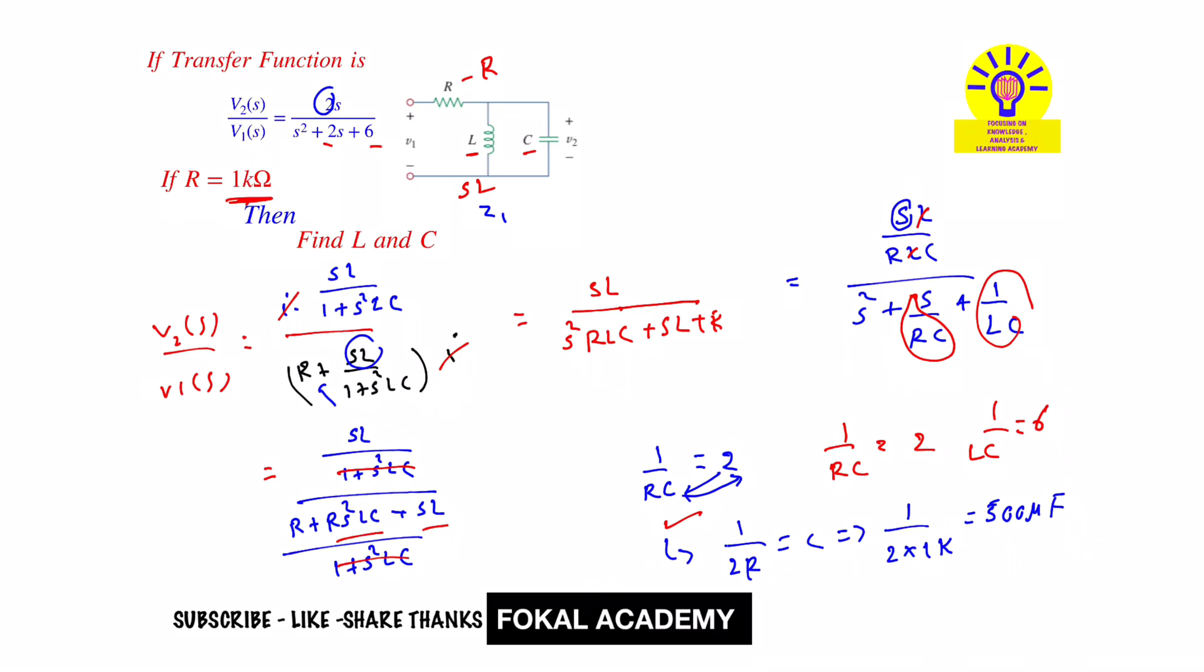Now we know the capacitance. Now substitute the value in this equation, we get inductance. That is 1/(LC) = 6. That is 1/(L × 500 microfarad) = 6. By simplifying this we will get 333.3 Henry. This is the inductance.